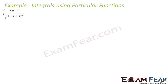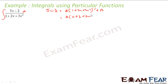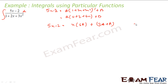So for this kind of pattern, if the question is in this pattern, I have to write 5x-2 as a·(derivative of 1+2x+3x²) + b. The derivative of 1+2x+3x² is 2+6x. So 5x-2 = a·(6x+2) + b, which gives x·(6a) + (2a+b). Comparing the x part: 6a = 5, so a = 5/6.